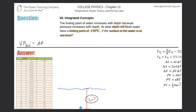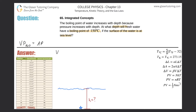They want us to find the depth at which water has a boiling point of 150 degrees Celsius. Going to the table, at 150 degrees Celsius the vapor pressure of water is 4.76 times 10 to the 5 Pascals. Since that is the boiling point, this vapor pressure must equal the absolute pressure at that point — so the absolute pressure there is 4.76 times 10 to the 5 Pascals.